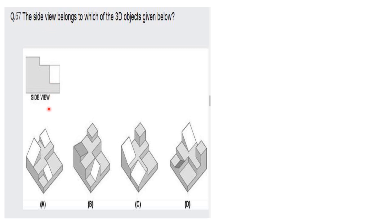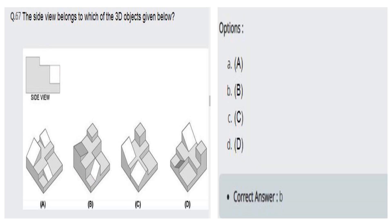The next question gives a side view and asks us to identify the corresponding 3D shape. Option D does not match, and option C does not match either. In option B, the gray-colored shape with the correct step surfaces — surfaces one, two, and three — matches, and the white portion aligns correctly. So option B is the right answer.